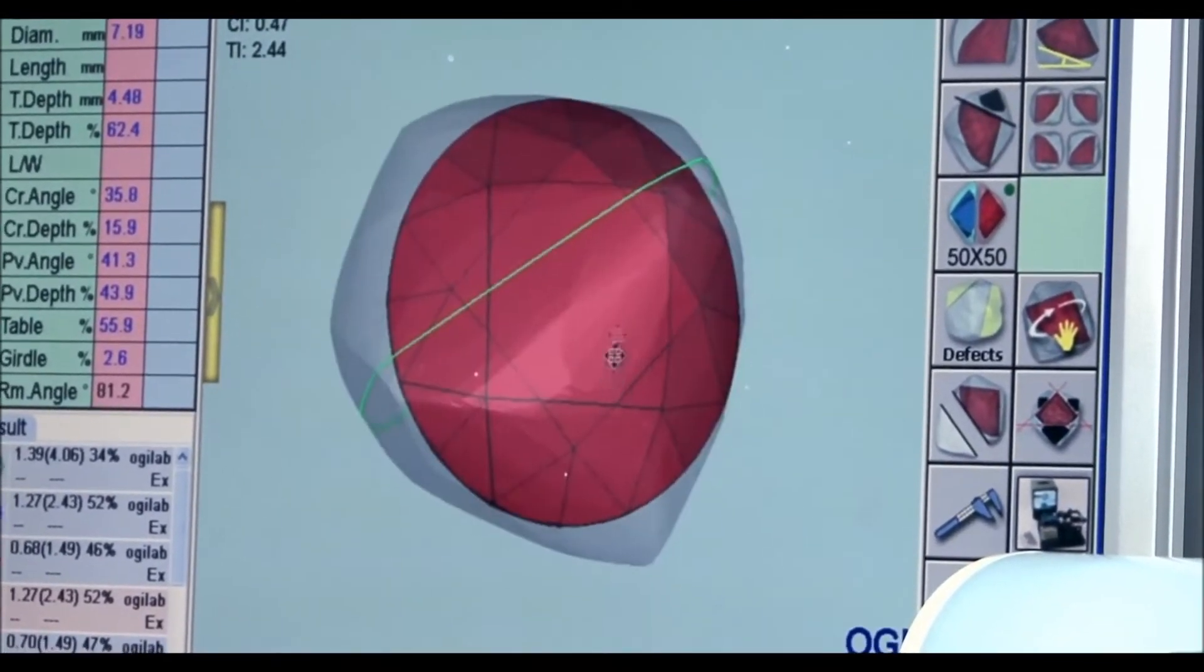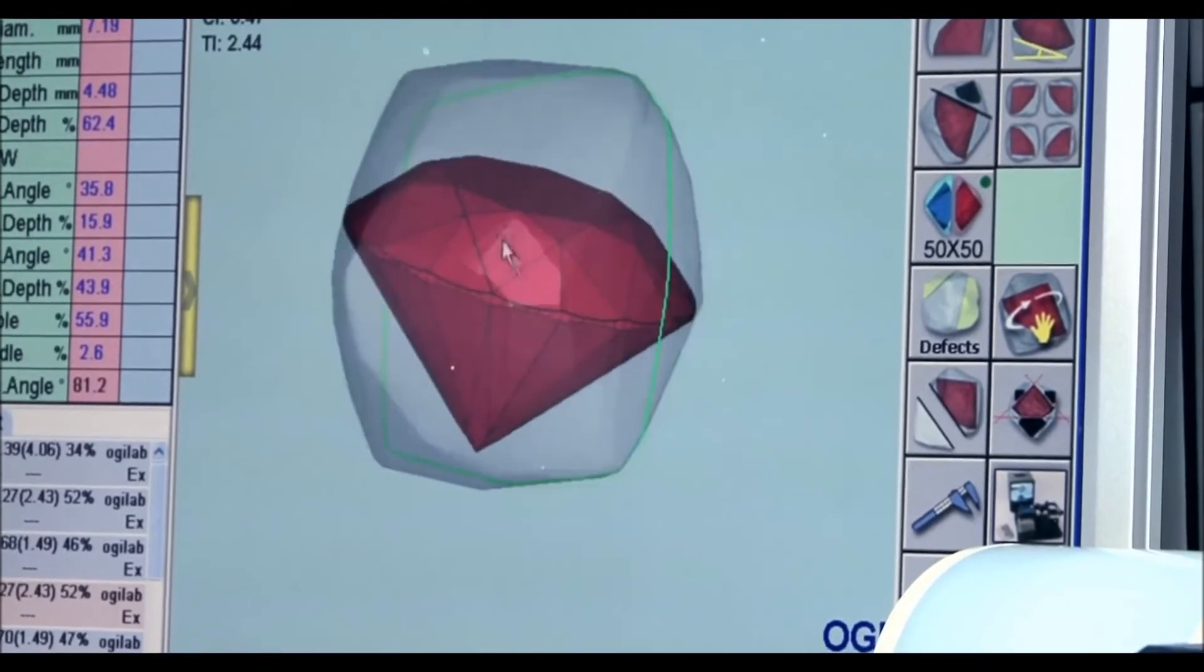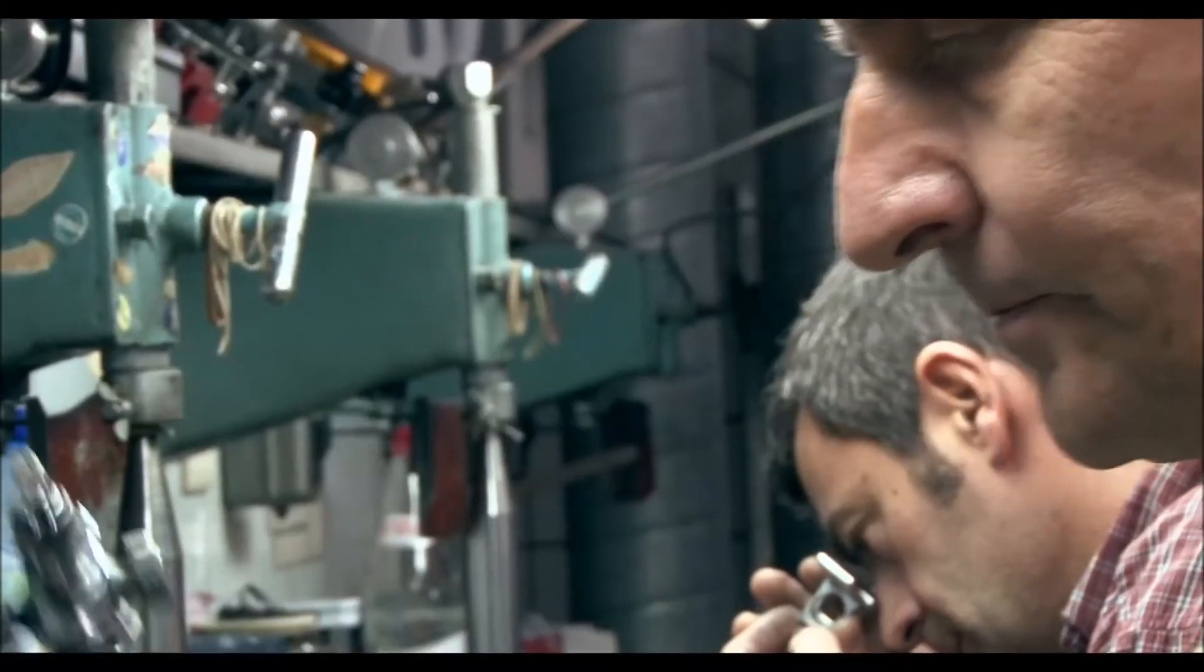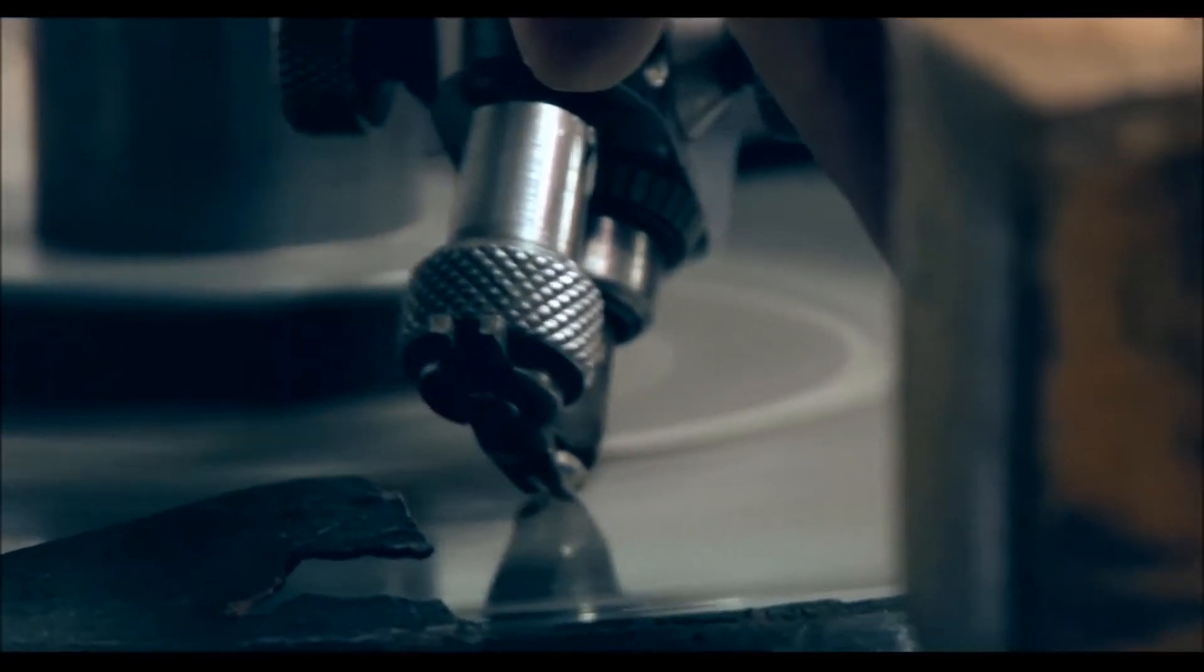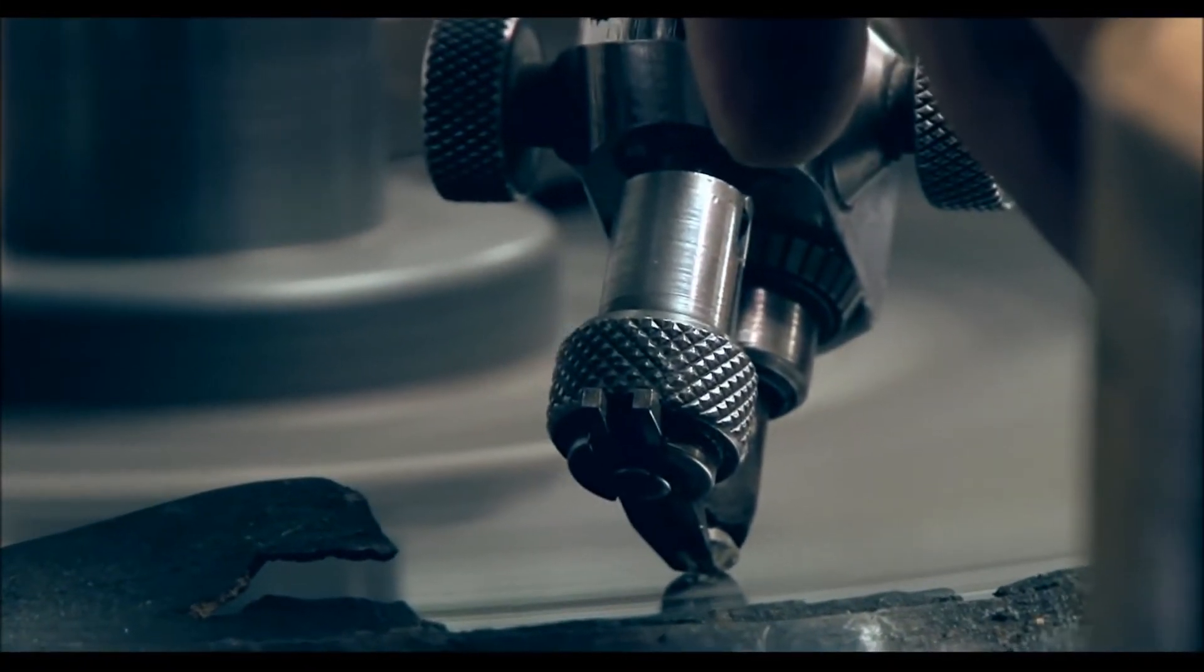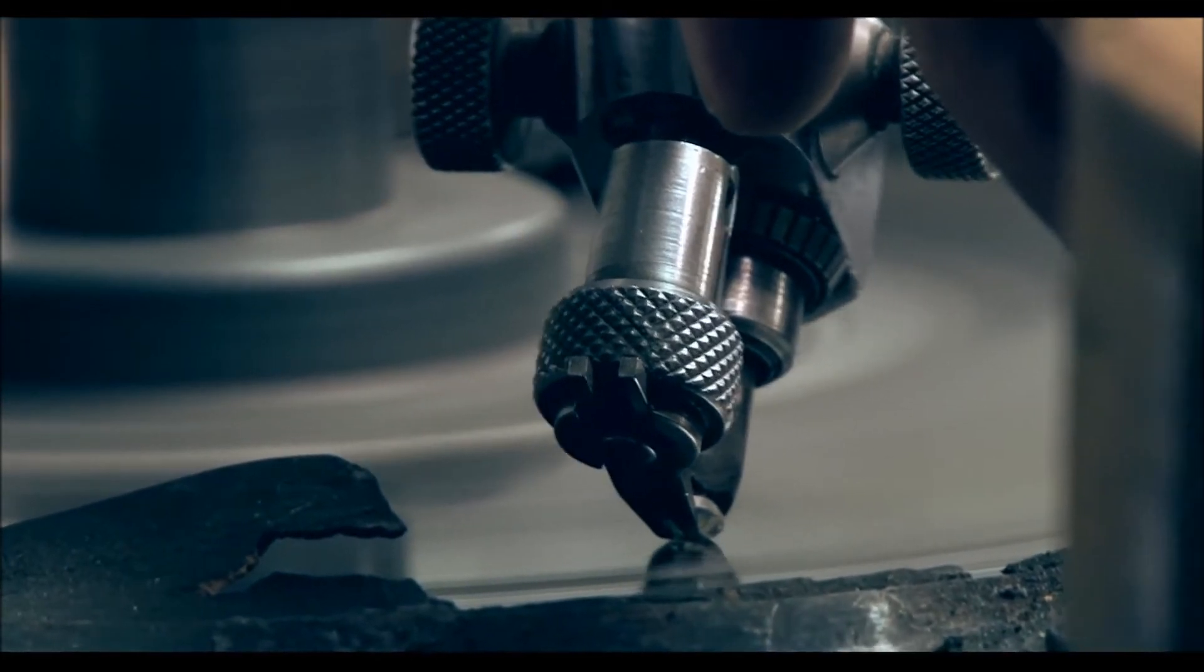Once a cutting option has been confirmed, the diamond is then handed to the first polisher. He puts the initial eight facets on the diamond: four in the pavilion and four on the crown, which is on the top of the stone.